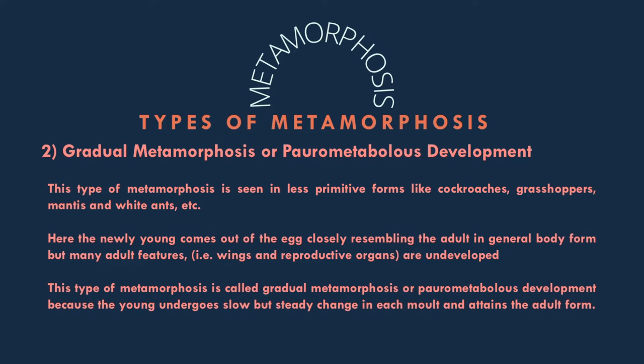Gradual metamorphosis is the type of metamorphosis seen in less primitive forms like cockroaches, grasshoppers, mantis, and white ants. Here, the newly young which comes out of the egg closely resembles the adult in general body form, habits, and habitat, but many adult features like wings and reproductive organs are undeveloped and their relative body proportions also differ. This type is called gradual or parometabolous development because the young undergoes slow but steady change in each stage until it attains the adult form.